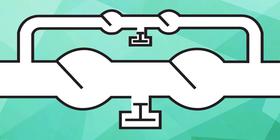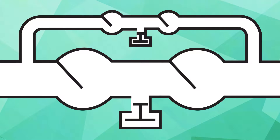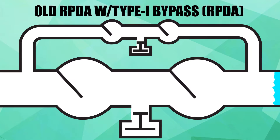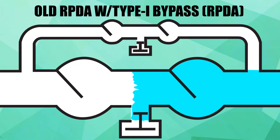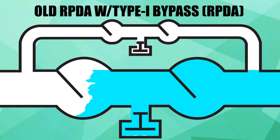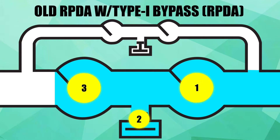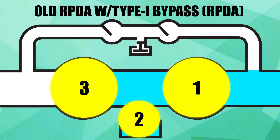First, a comparison of the paths through the main valve. During a backflow condition on an old RPDA with a Type 1 bypass, the water first encounters the main valve second check. Next, the water encounters the main valve relief valve. And then the water encounters the main valve first check. This provides three mechanisms of backflow protection.